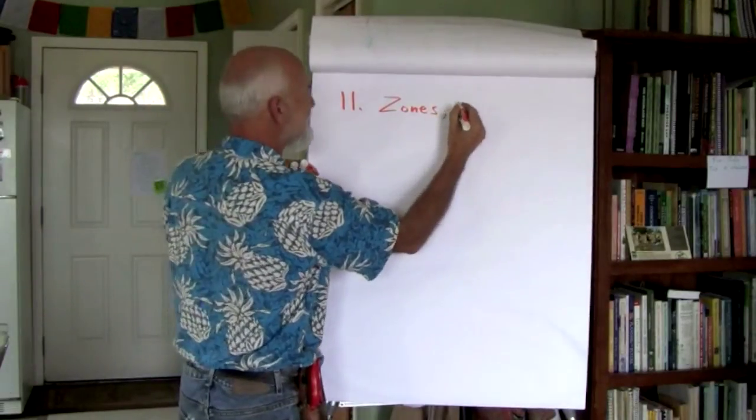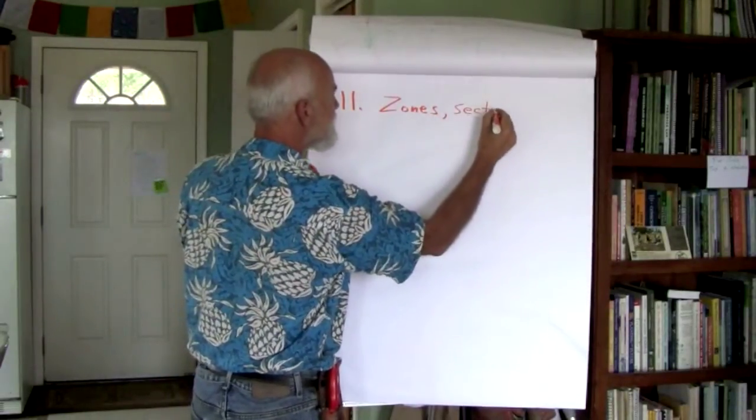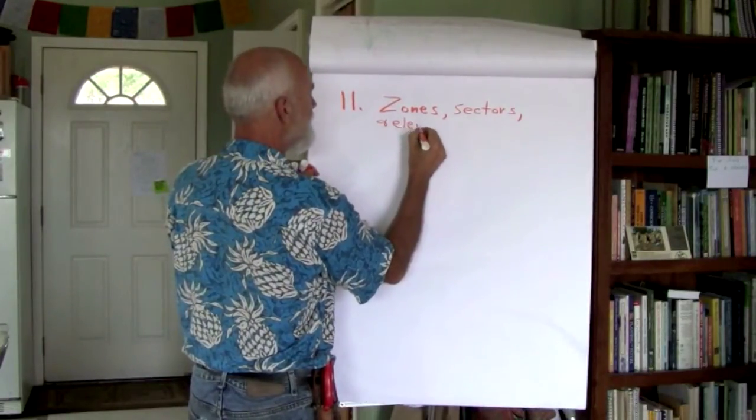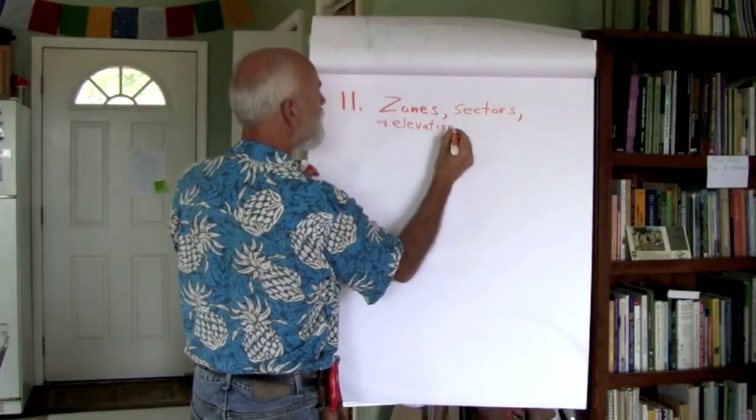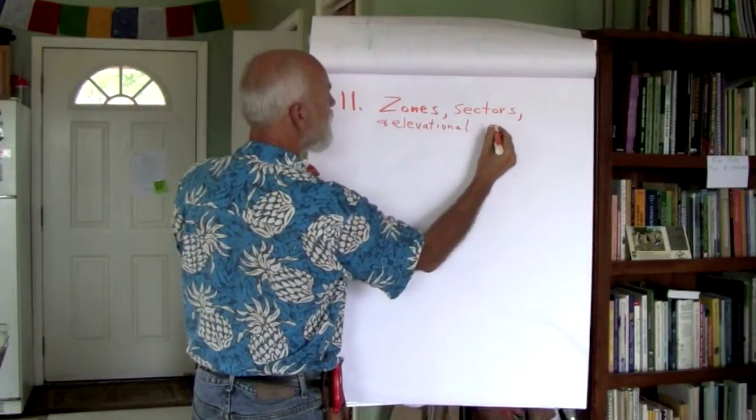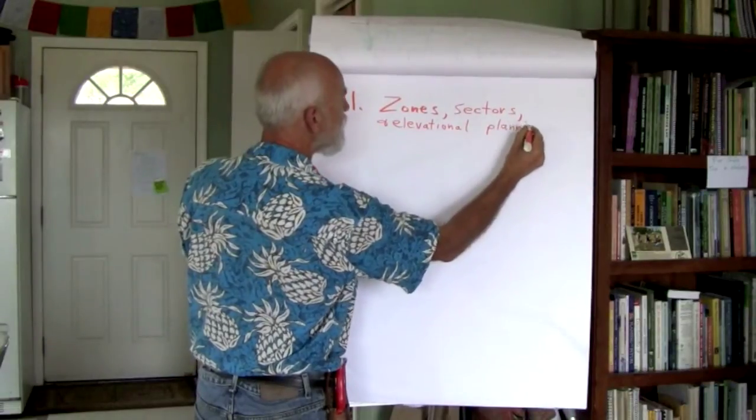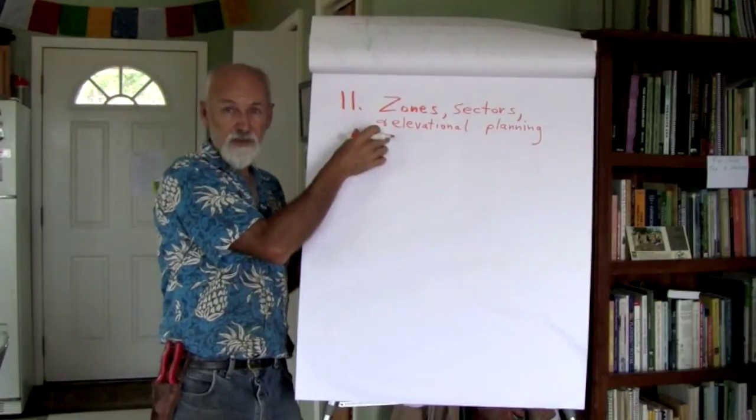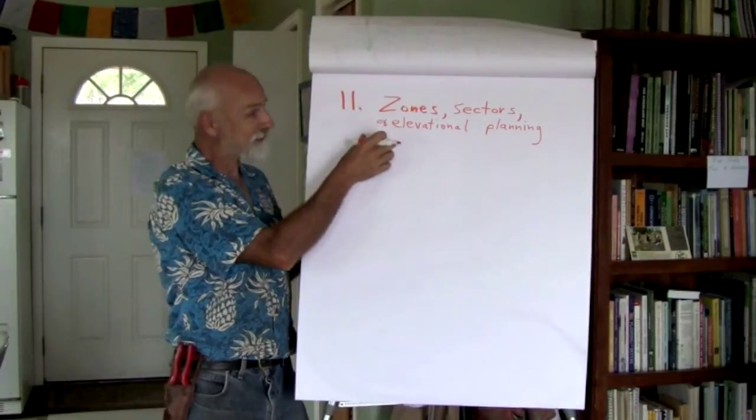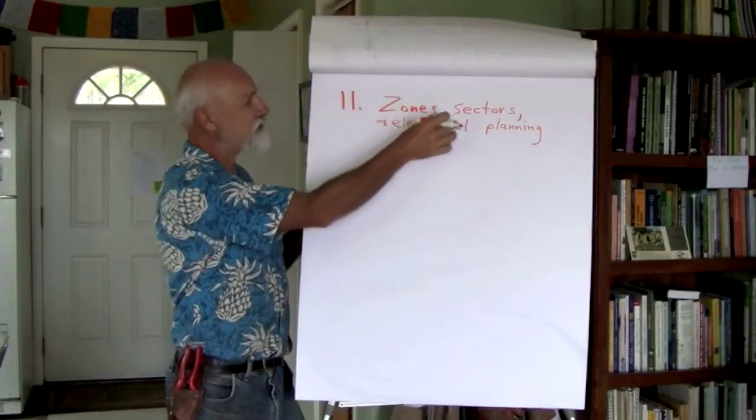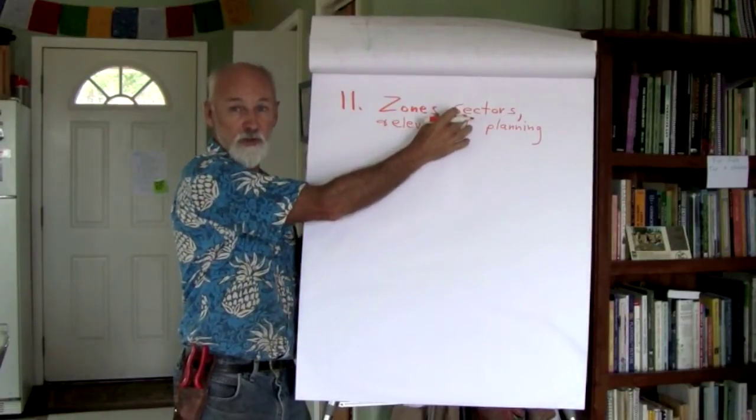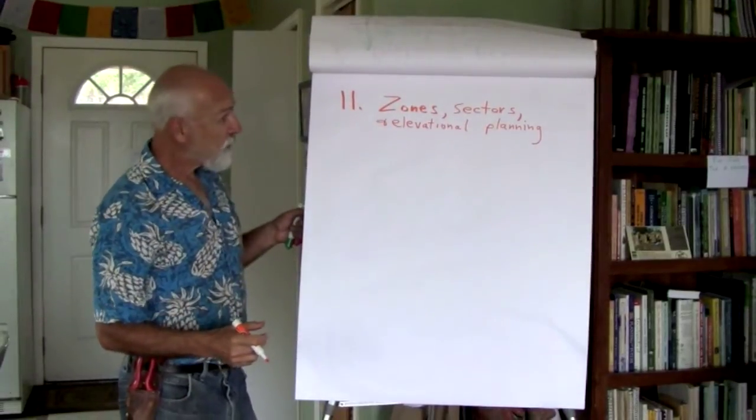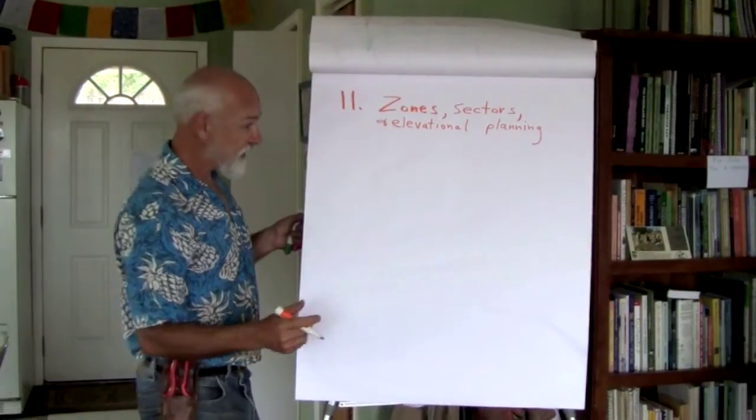Number 11, zones, sectors, and elevational planning. This is a big principle to unpack here because each one of these usually takes up a good hour or more of a lecture in any permaculture curriculum. We'll at least do a short version here.